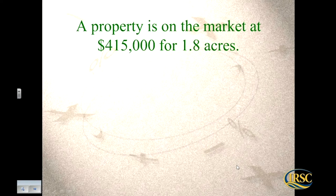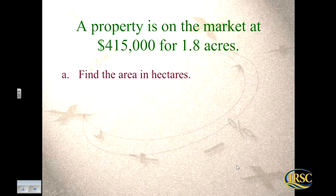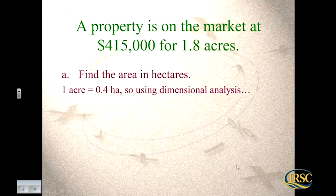A property is on the market for $415,000 for 1.8 acres. Say you're a real estate agent with clients from outside the U.S. — they're probably more familiar with the metric system. So it helps to know how to convert the area to hectares. We need to convert 1.8 acres to hectares. We know one acre equals 0.4 hectares, so now we can use dimensional analysis.